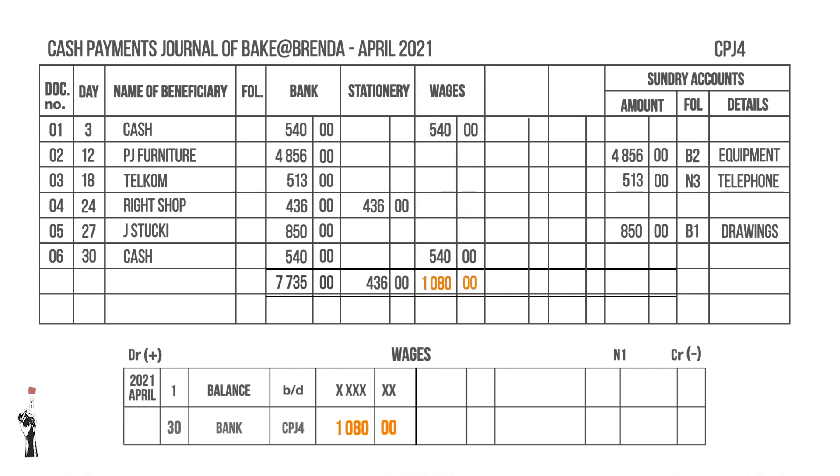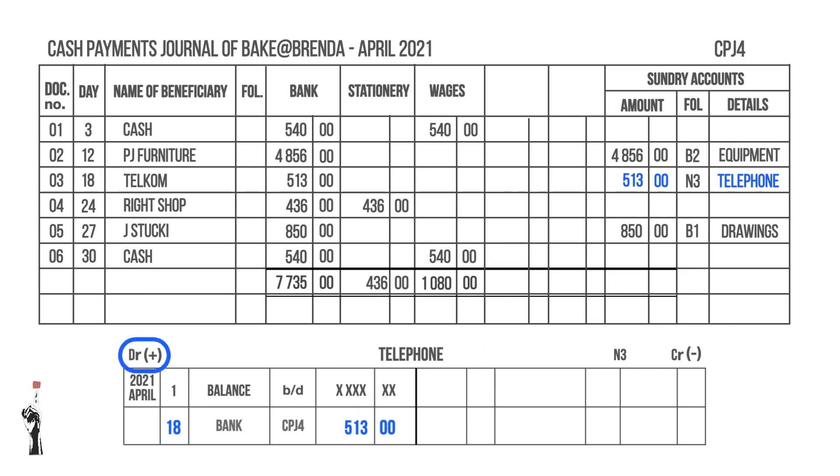The last account we will be exploring today is telephone. Telephone is an expense or loss and will be recorded on the debit side. Thank you very much for tuning in to Tumamina Teaching. Today we've learned how to post the CPJ into the general ledger. For the next lesson, we'll be looking at the CRJ and the CPJ and how to post and balance them in the general ledger.